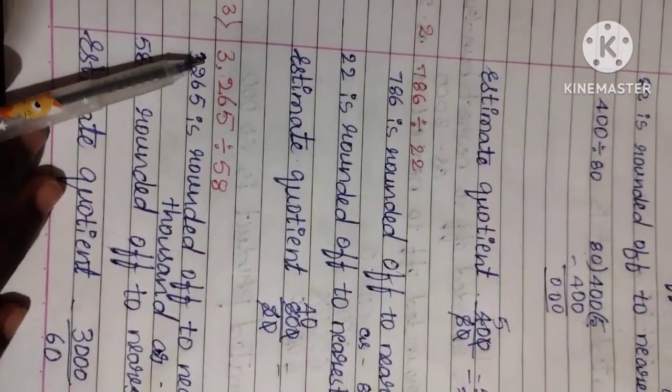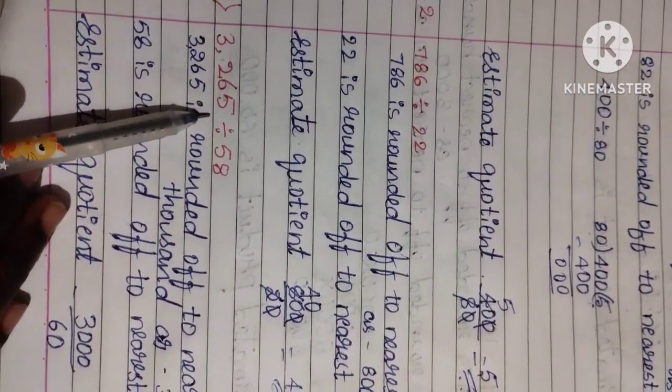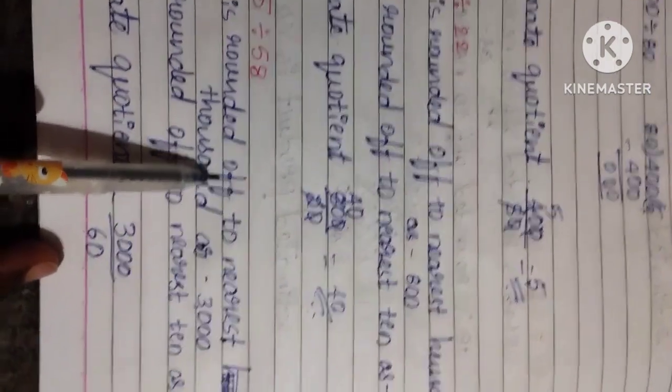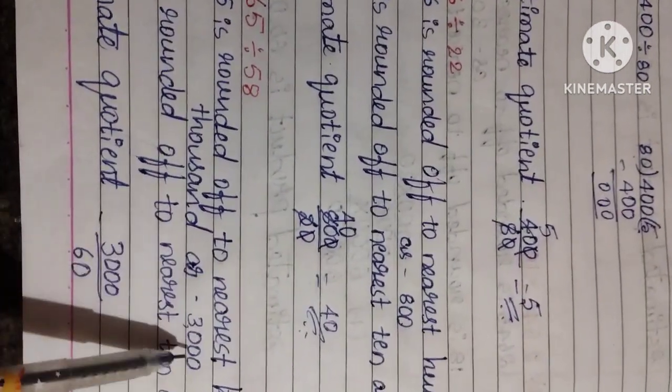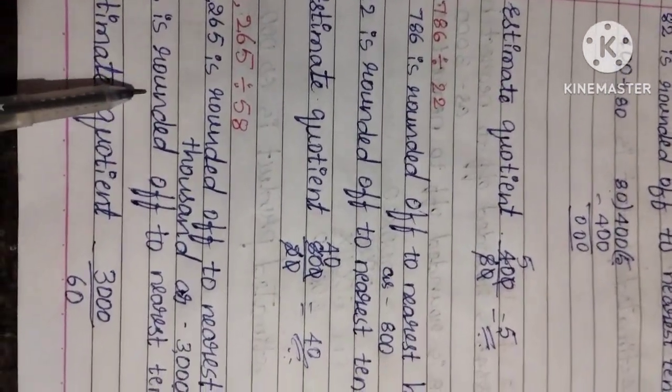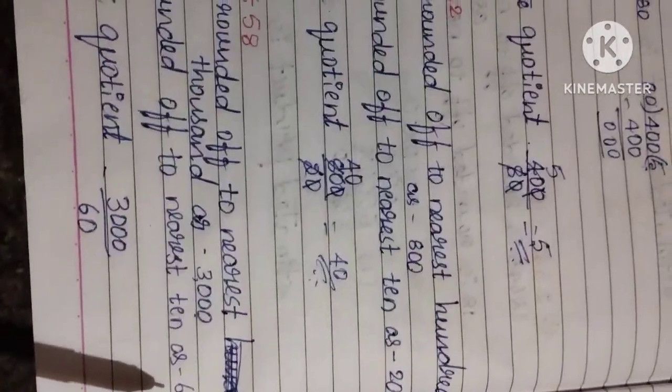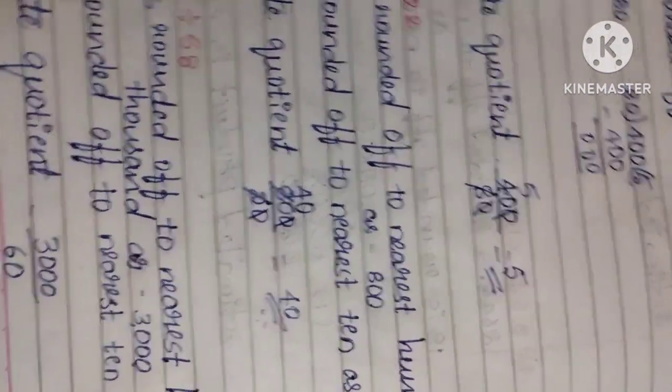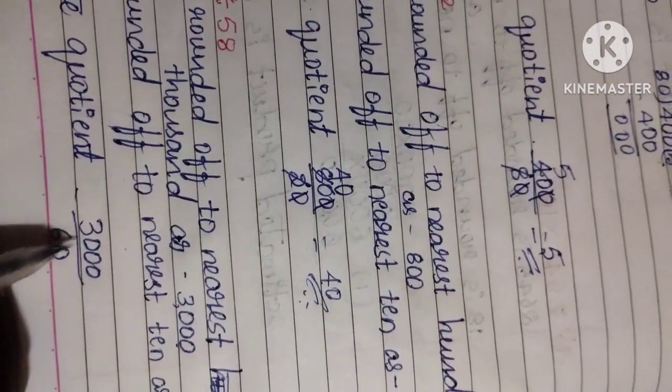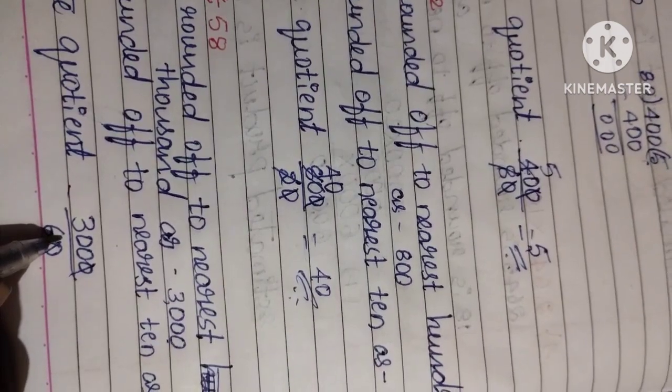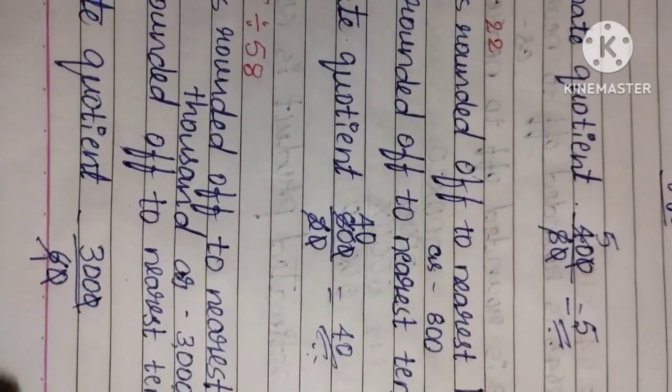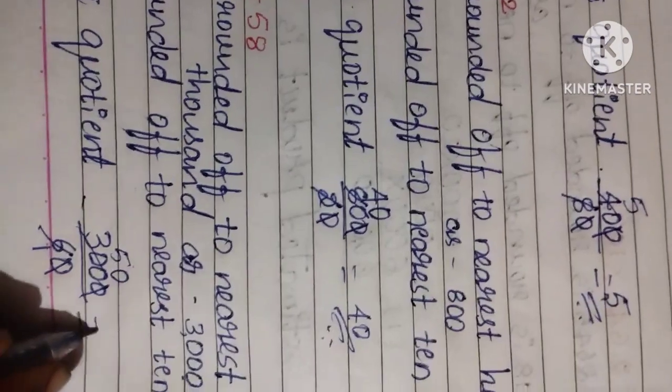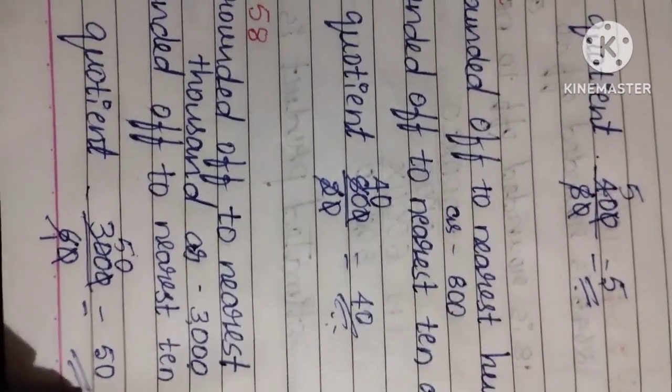Next we have third question: 3,265 divided by 58. 3,265 is rounded up to nearest 1000 as 3000, and 58 is rounded up to nearest 10 as 60. Cancel the zeros. Now 6 fifties are 300. Answer is 50. This is finished.